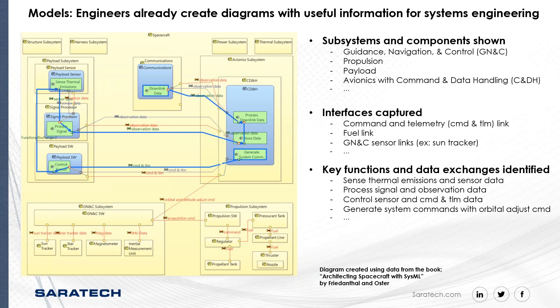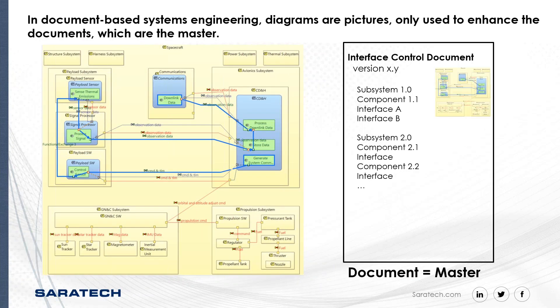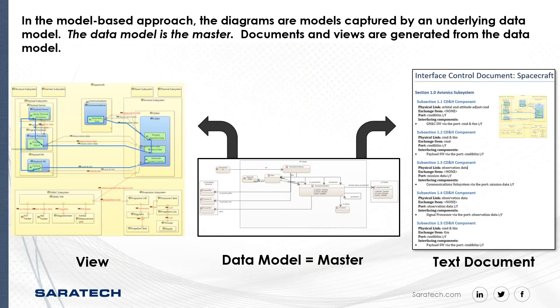When it comes to text-based, document-based systems engineering — the traditional approach — these diagrams are just pictures used to enhance the documents, which are the master. In that approach, you'd cut and paste the diagram as a picture into the document. In contrast, the model-based approach treats diagrams as actual models captured by an underlying data model, and the data model is the master. Any documents and other views you want are generated from the data model — and that is a big difference.